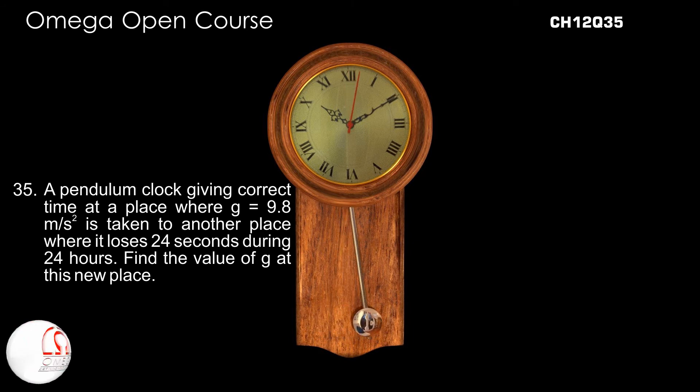A pendulum clock giving correct time at a place where g is 9.8 meters per second square is taken to another place where it loses 24 seconds during 24 hours. Find the value of g at this new place.